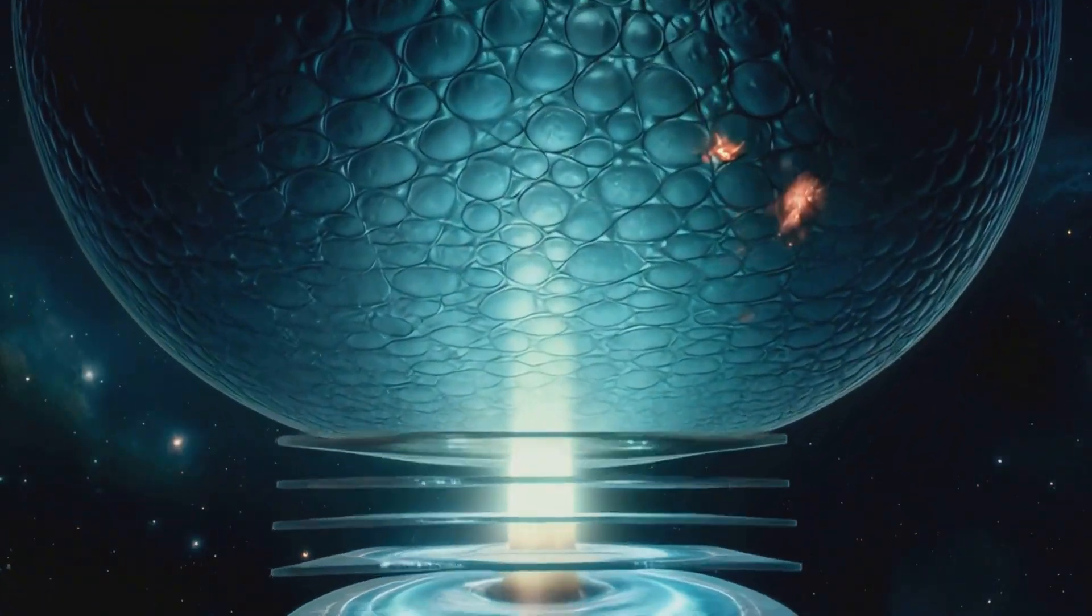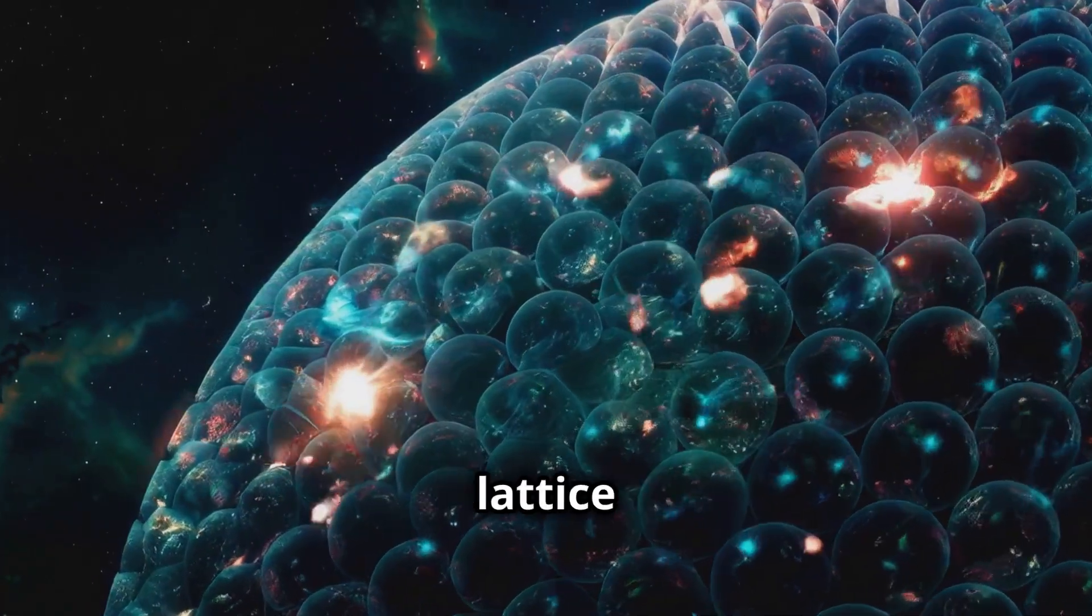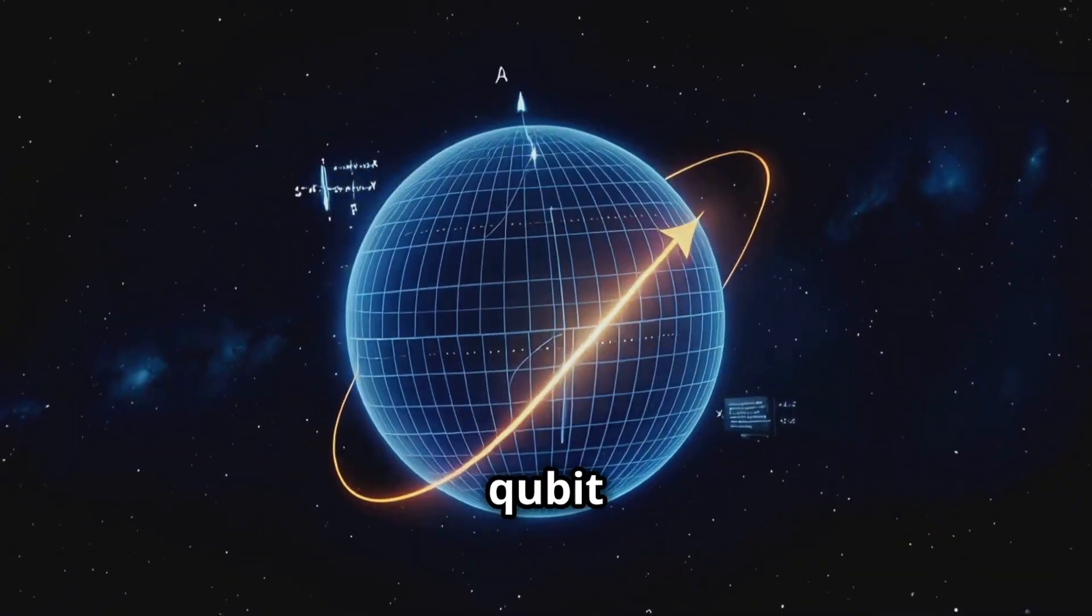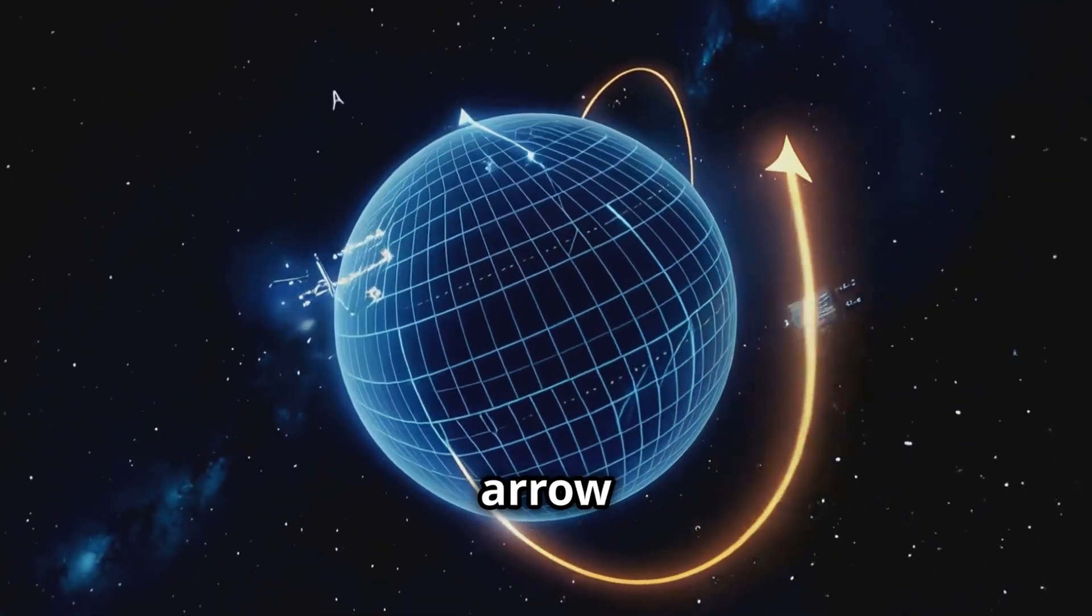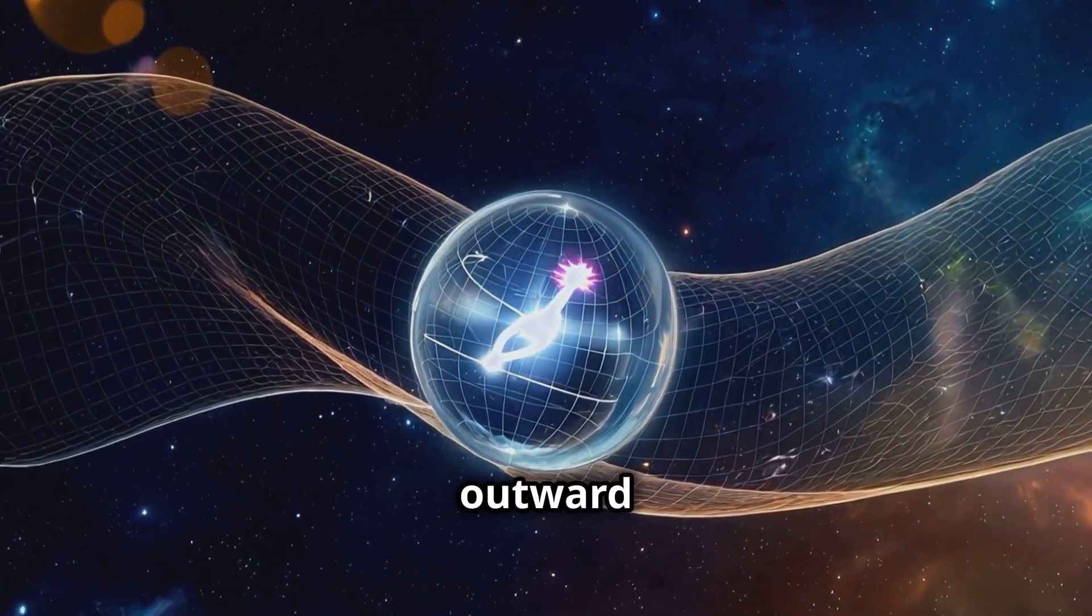Imagine this: as the light projects outward, it forms the holographic lattice of existence. Each cubit is a pixel, spinning its arrow,